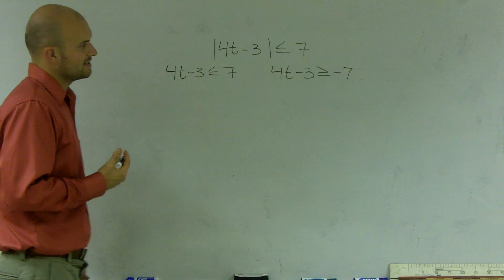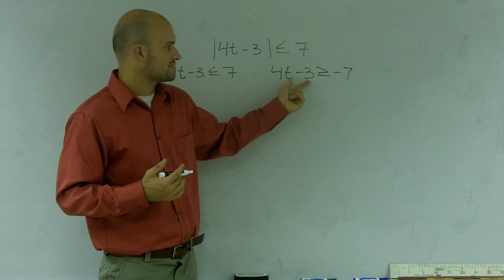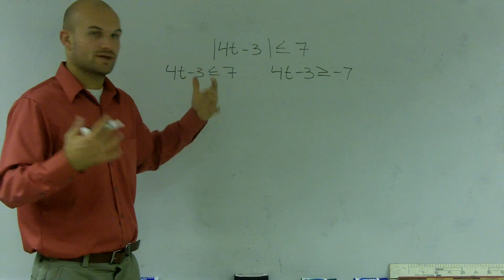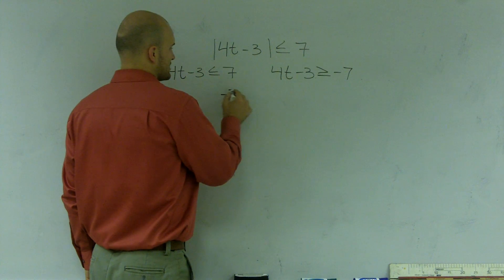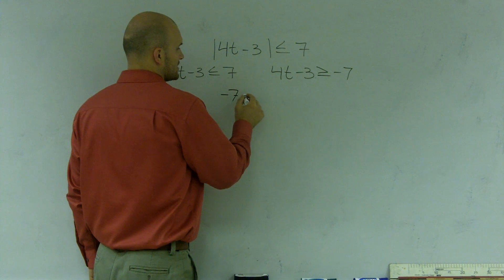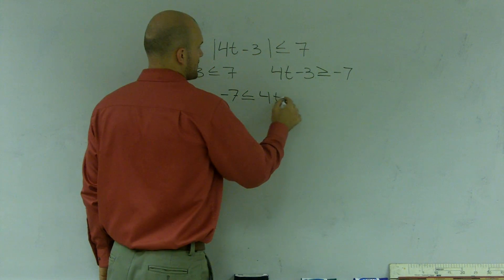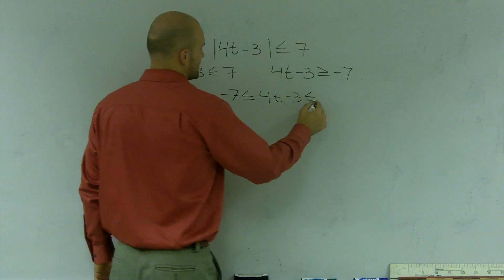So what we notice is, if you look at this, it says 4t minus 3 is greater than negative 7, but it's less than 7. So we can write this as a compound inequality, where I would say negative 7 is less than or equal to 4t minus 3 is less than or equal to 7.